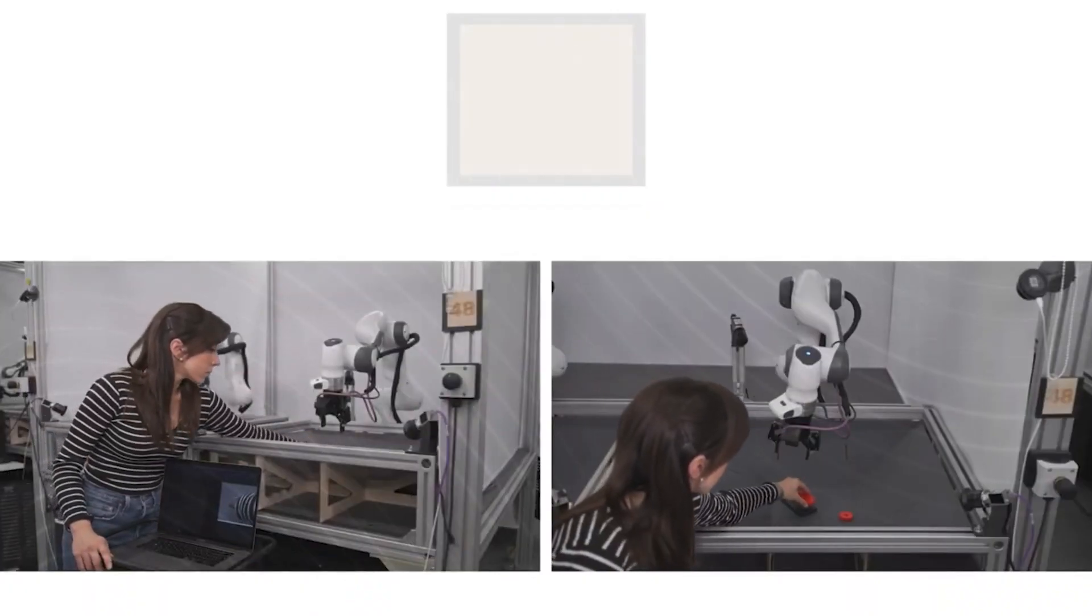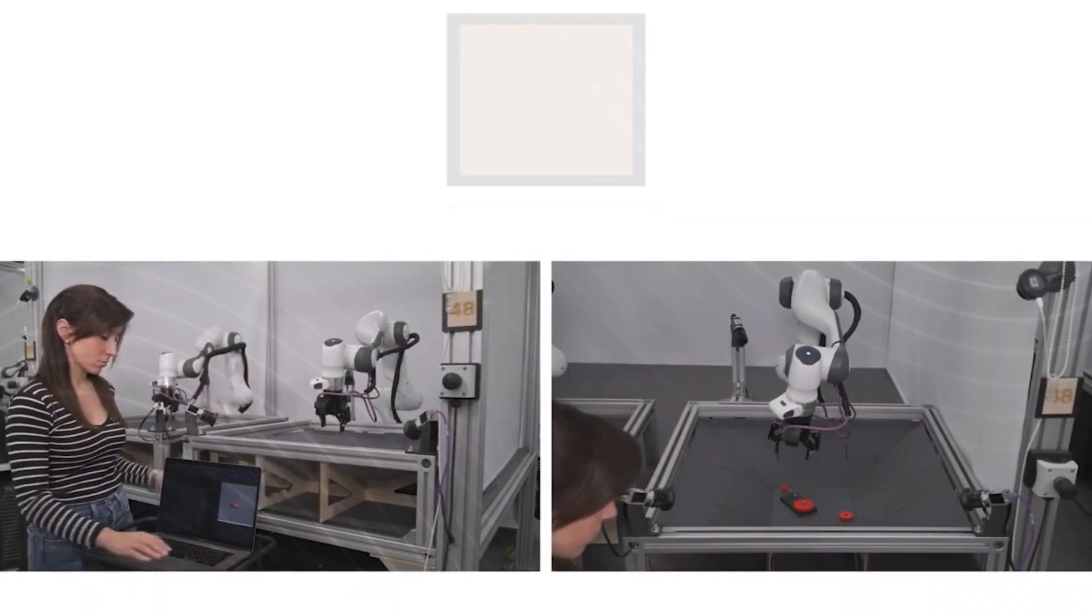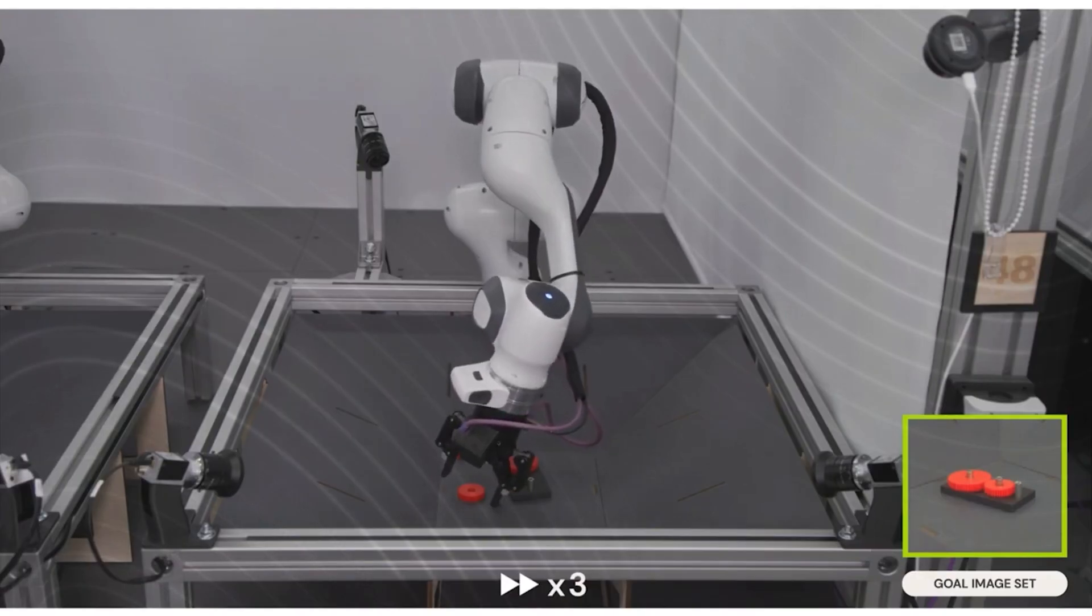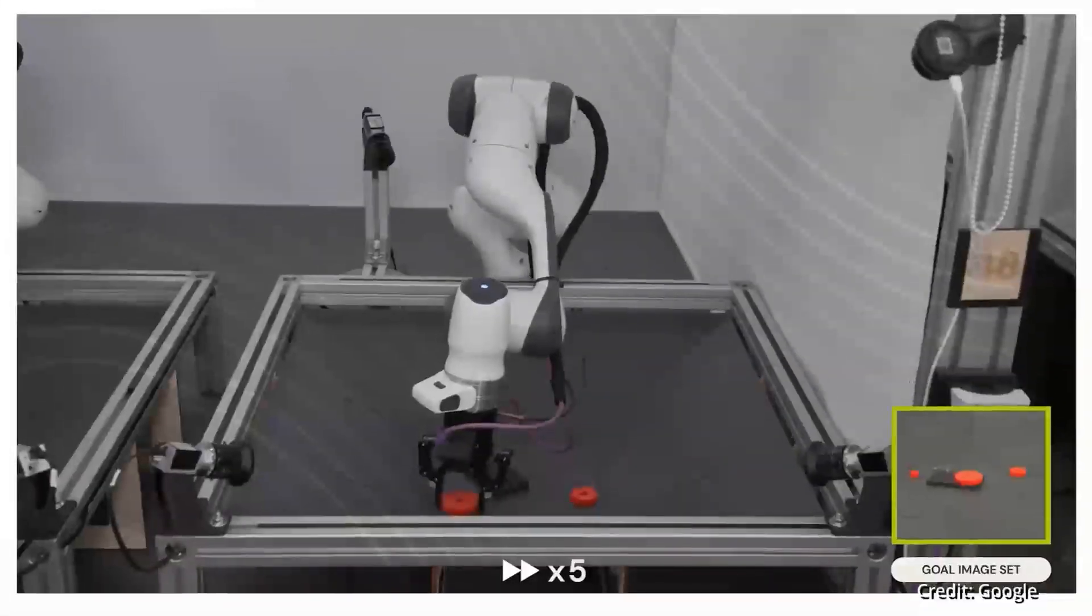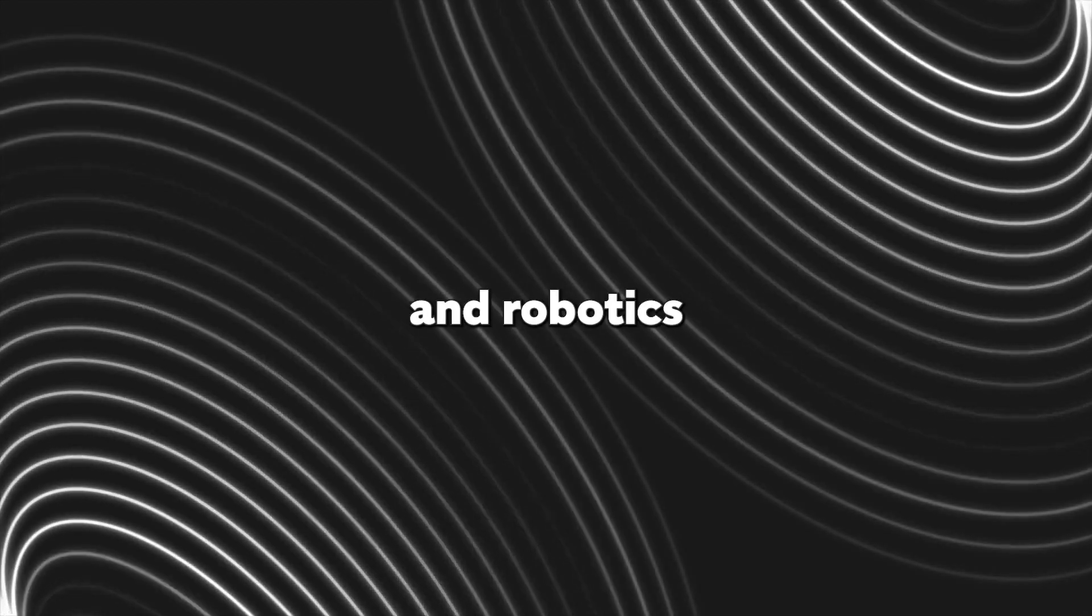RoboCat generates its own set of training data after it receives some initial training. When it learns to do a task, it'll generate more data to improve itself, giving it a bigger set of data to learn from. This is a massive leap forward in the field of AI and robotics.